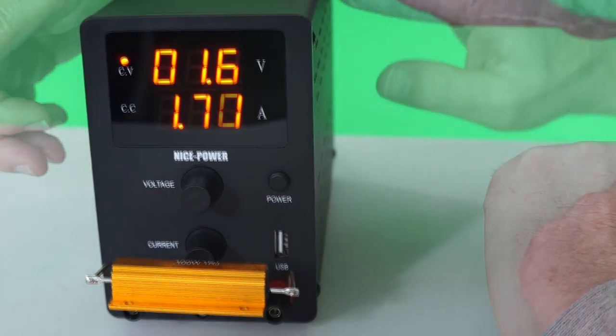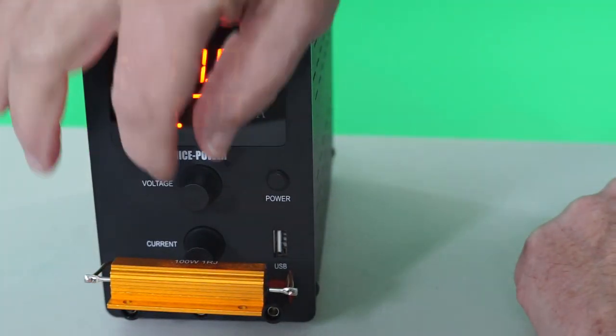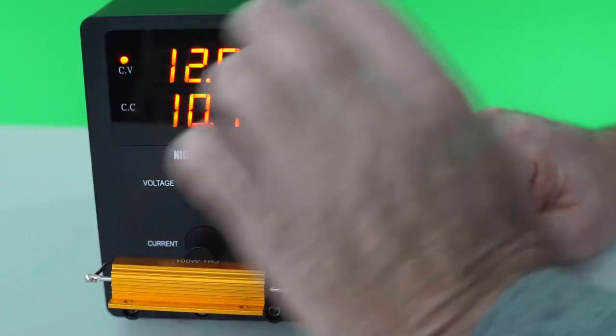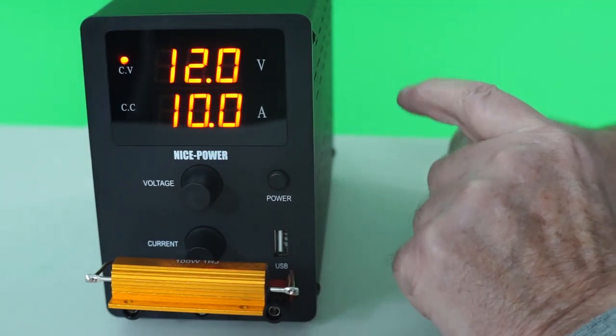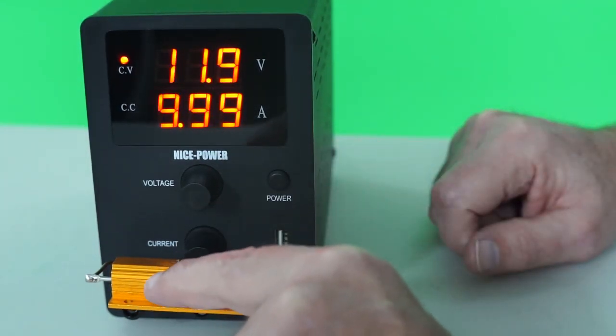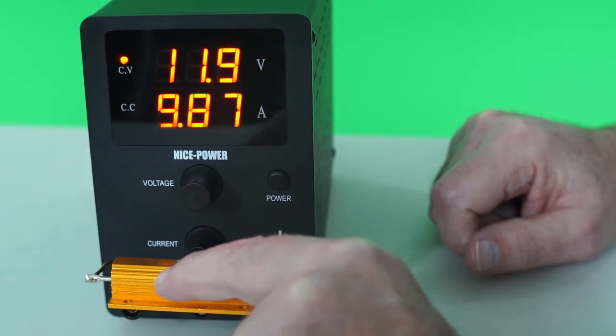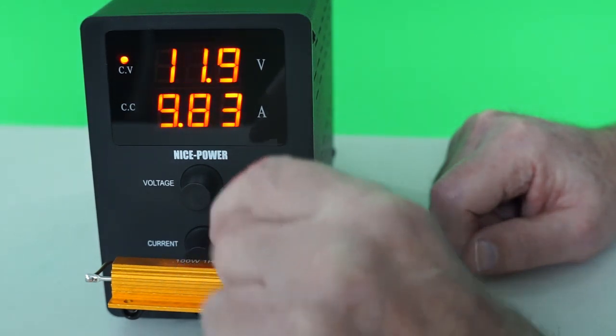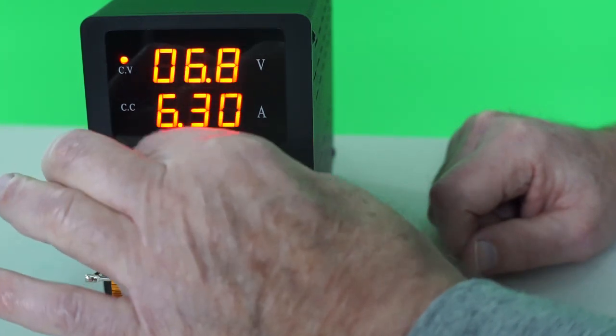Can this thing pump out 10 amps? Yes, it can. And at 12 volts, that's about 120 watts. This 100 watt resistor is going to allow me to fry an egg here pretty soon, so I won't leave it there for any length of time. Step it down here.